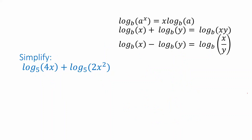Here's another example. This time we're adding two logarithms with the same base together, and that corresponds to this property. The identity tells us we can simply multiply the arguments of the two logarithms together. So if we do that, we'll have log base 5 of the product 4x times 2x squared.